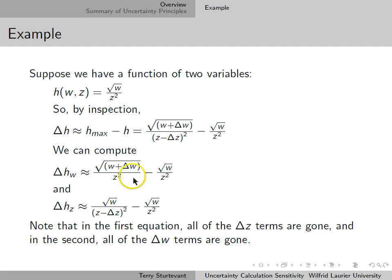Notice that in the first equation, all of the delta z terms have gone away because we've made it zero, and in the second equation, all of the delta w terms have gone away because we've made delta w be zero.